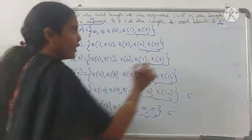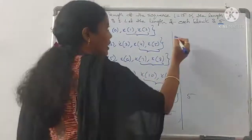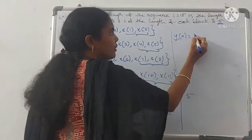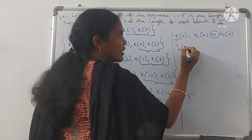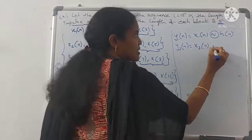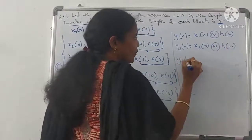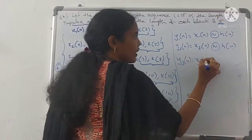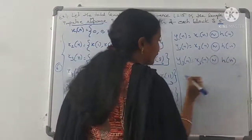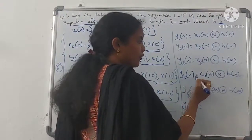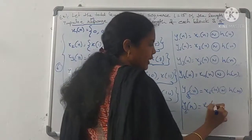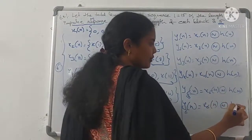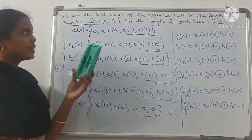After obtaining all 6 blocks, compute: y1(n) = x1(n) circular convolution with h(n), y2(n) = x2(n) circular convolution with h(n), and similarly for y3(n), y4(n), y5(n), and y6(n) = x6(n) circular convolution with h(n). This is the overlap save method.